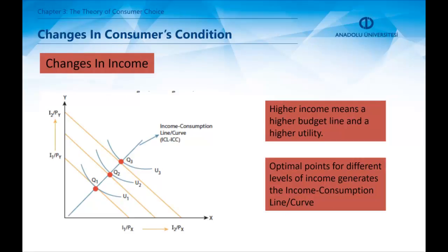Changes in income shift the utility function and budget line. Every increase in income causes a new optimal point to arise. These optimal points are shown in the figure by Q1, Q2, and Q3. Using these points, the income consumption curve is obtained. It shows the long-run variation in optimal points.